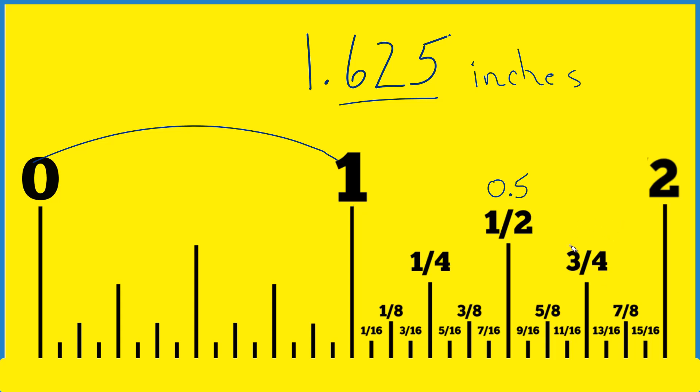Three-fourths of an inch, or three-fourths, divide three by four, you get 0.75. So now we know it's somewhere between here, and it looks like 0.625 would be about halfway between.